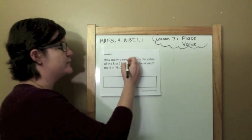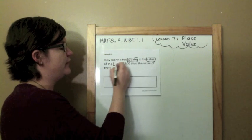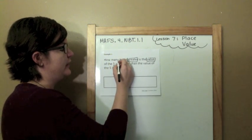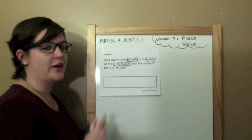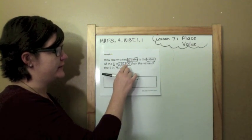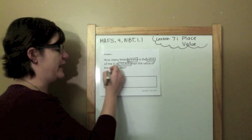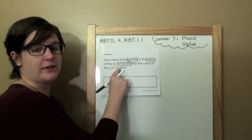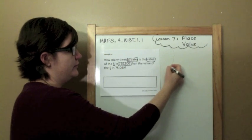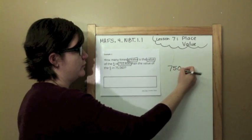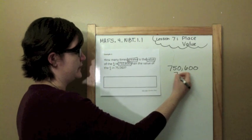So how many times greater is the value of the five in 750,600 than the value of the five in 75,060? I'm going to show you how to do this problem.